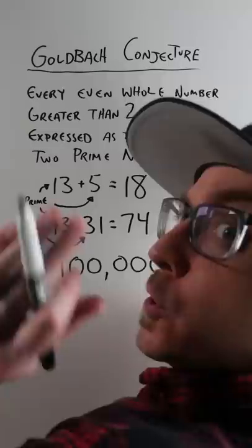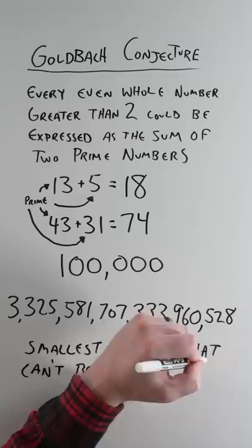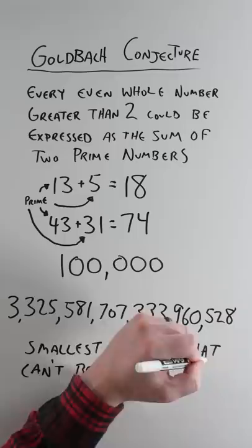Now we use computers, so we know 3 quintillion, 325 quadrillion, 581 trillion, 707 billion, 333 million, 960 thousand, 528 is the smallest number that can't be written with two primes if one of those primes is smaller than 9,781.